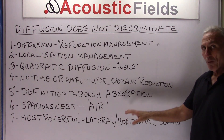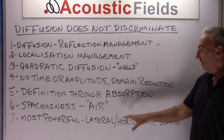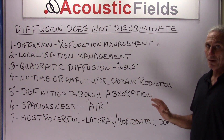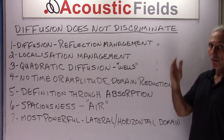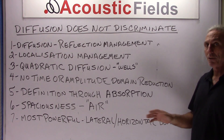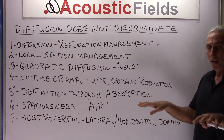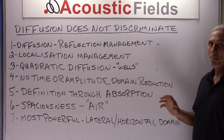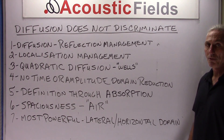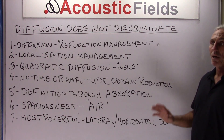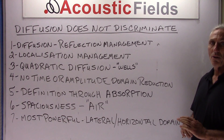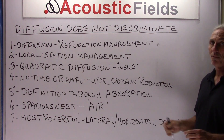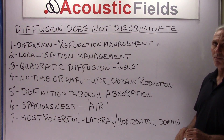Quadratic diffusion is most powerful in the lateral or horizontal domain. A vertical diffuser positioned vertically spreads sound out in a horizontal direction, which is a very powerful domain for quadratic diffusion to work in. You can also use it on the ceiling, and on front and rear walls, but each has a different purpose and function.